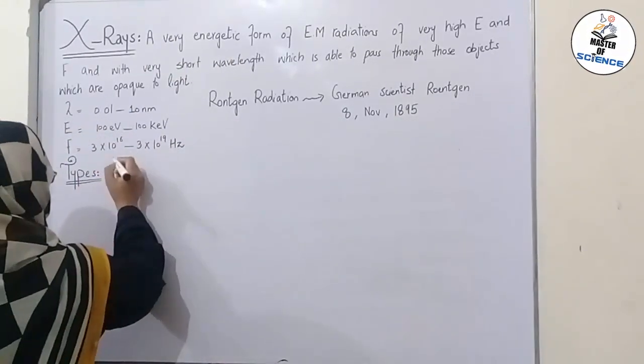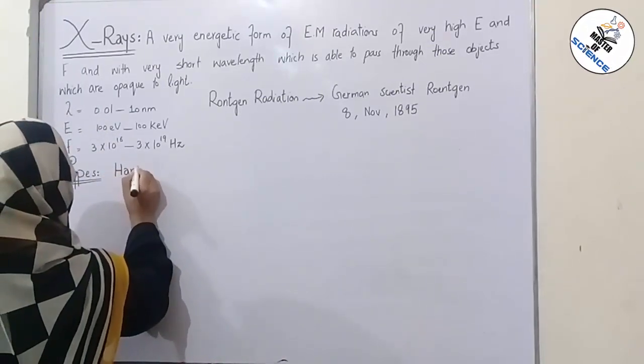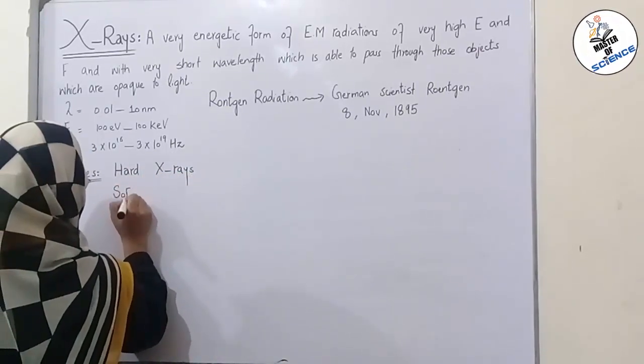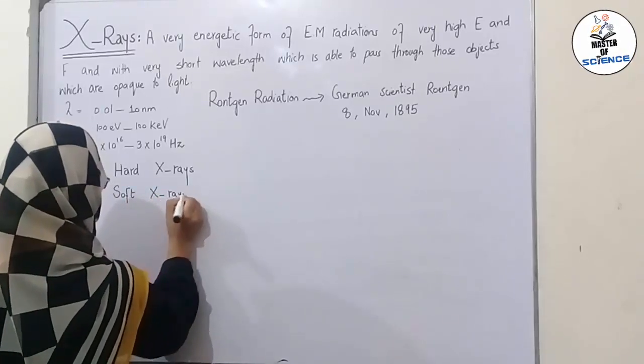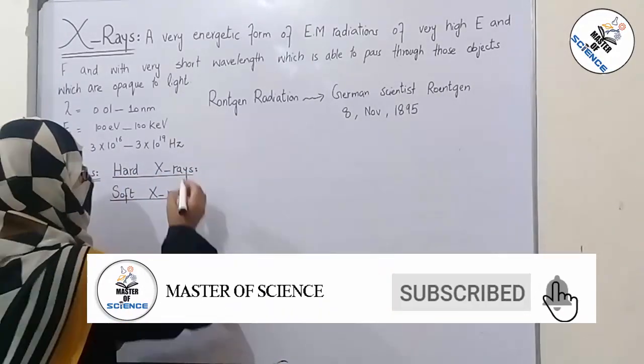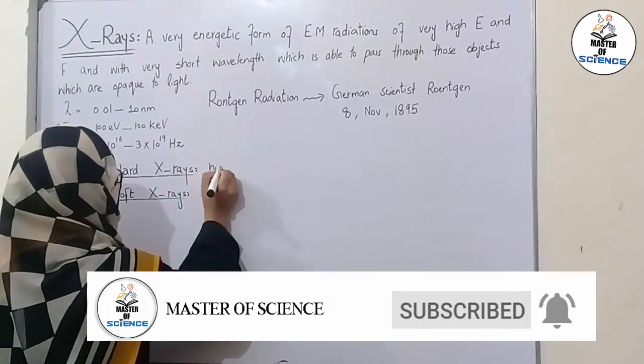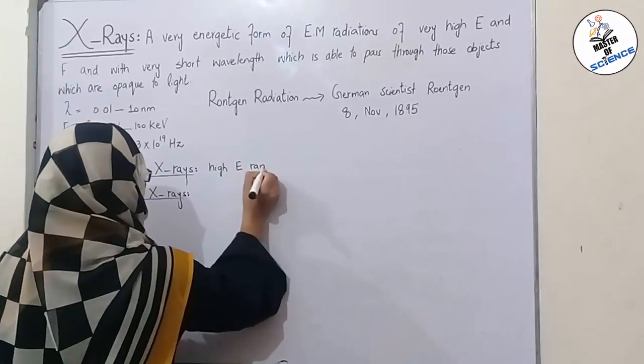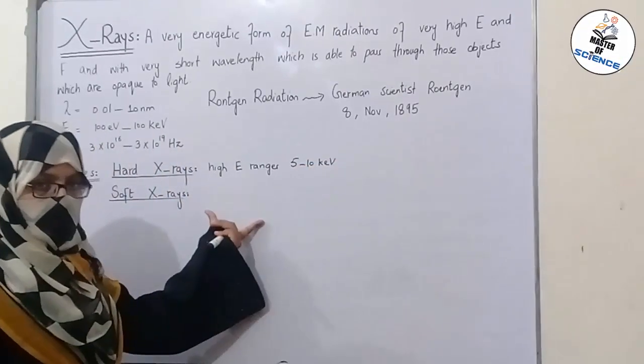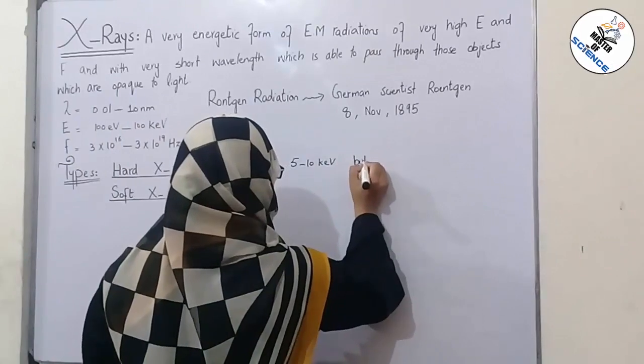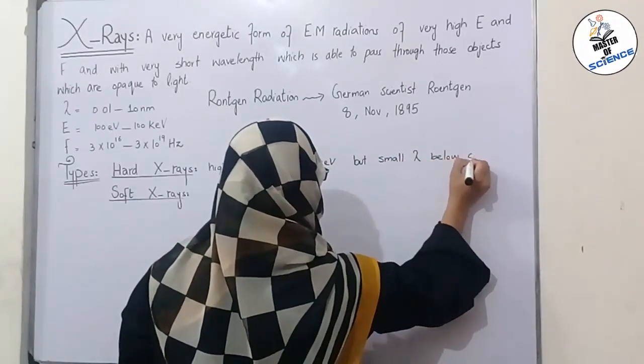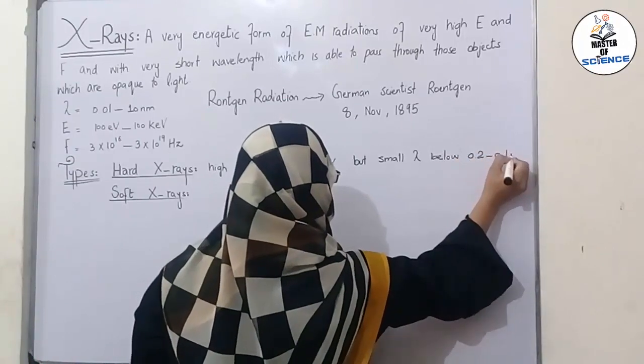High energy X-rays are called as hard X-rays. Those X-rays which have high energy ranges, and this energy ranges from 5 to 10 kilo electron volt, have high energy but wavelength is low, with small wavelength below 0.2 to 0.1 nanometer.